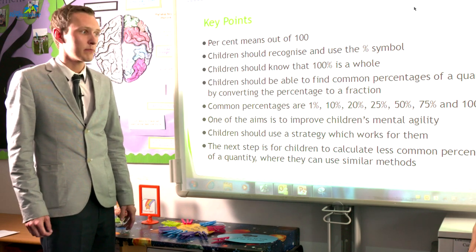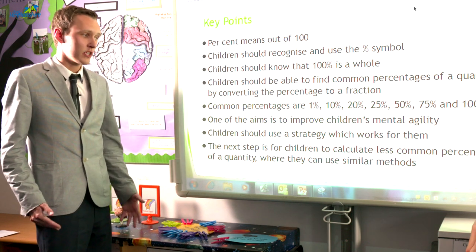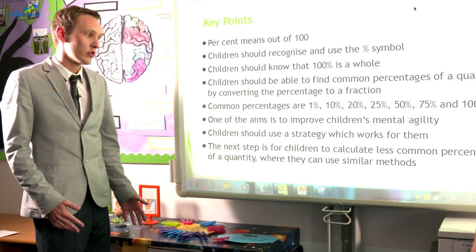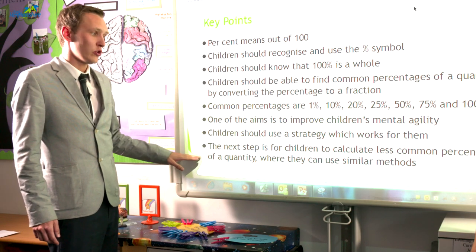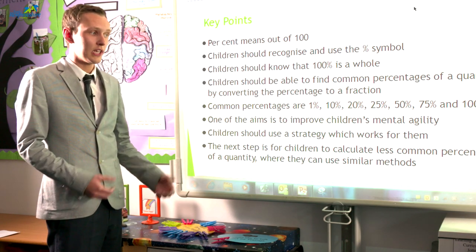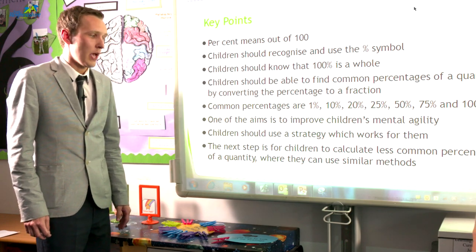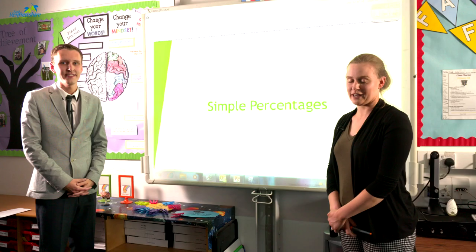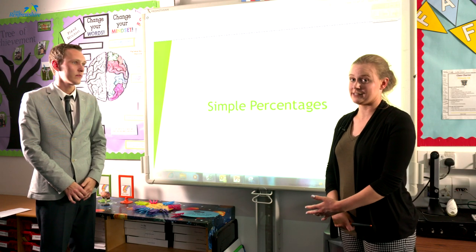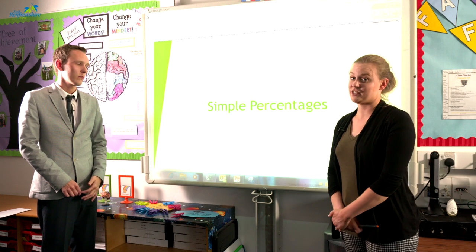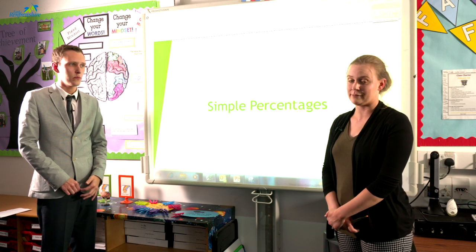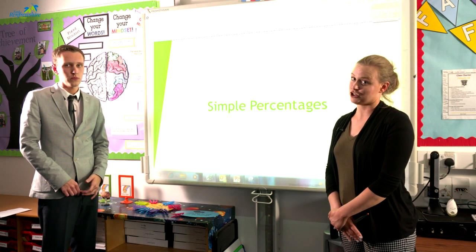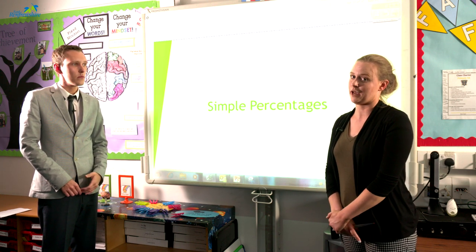That will then improve children's mental agility. It will give them a chance to think about what strategy works best for them and to use that strategy in their work. As children progress, they will start to use all of this learning to calculate less common percentages within different quantities. One of the main things we would like children to realise is that finding a percentage of a quantity is really exactly the same as finding a fraction of a quantity, and that they can memorise what fraction relates to what percentage in order to help them do this.